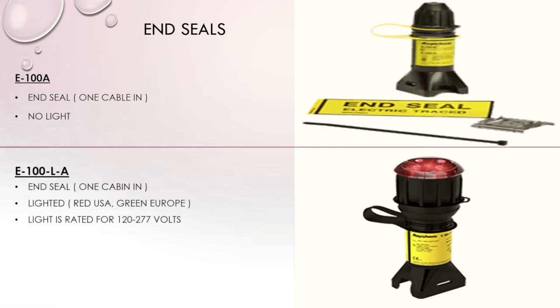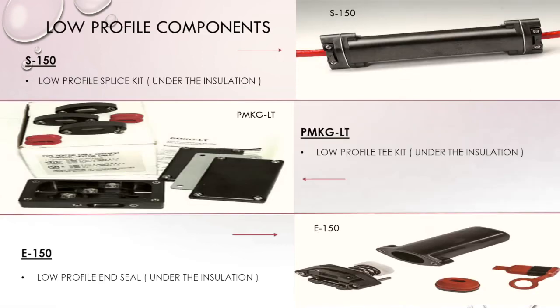Now let's look at low profile industrial components — also industrial, but designed to sit below the insulation. The S150 is our splice: one cable in, one cable out. The PMKG LT is a T: one cable in, two cables out. The E150 is our end seal: one cable in. That concludes our industrial heat trace components, covering both high profile and low profile.